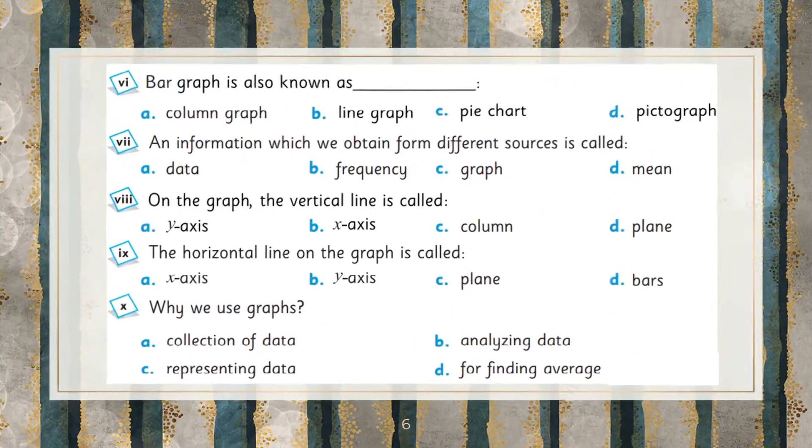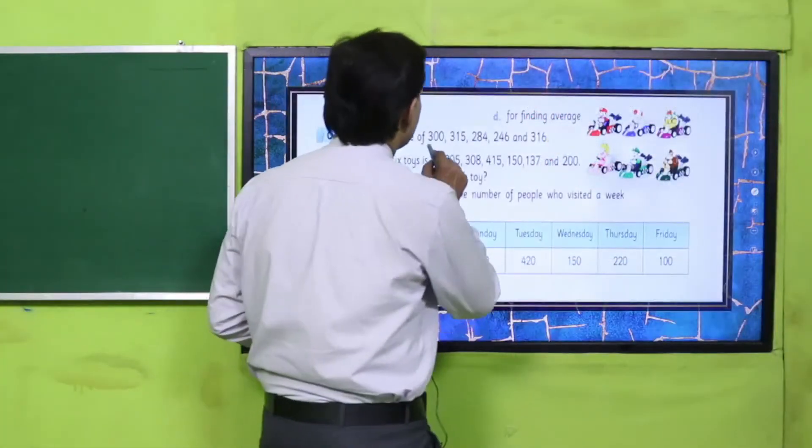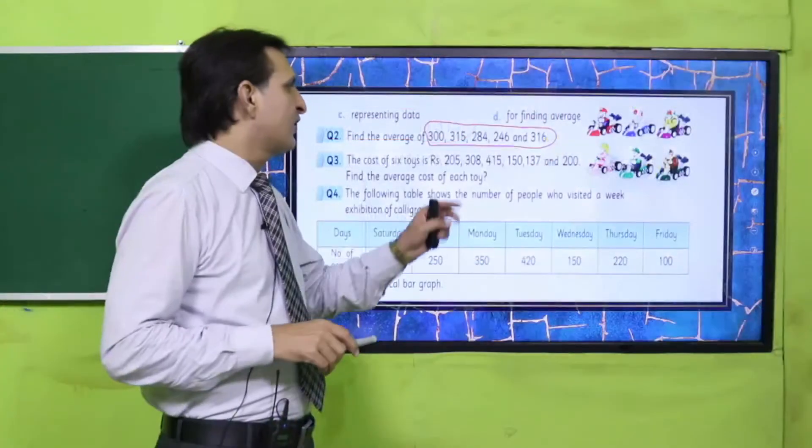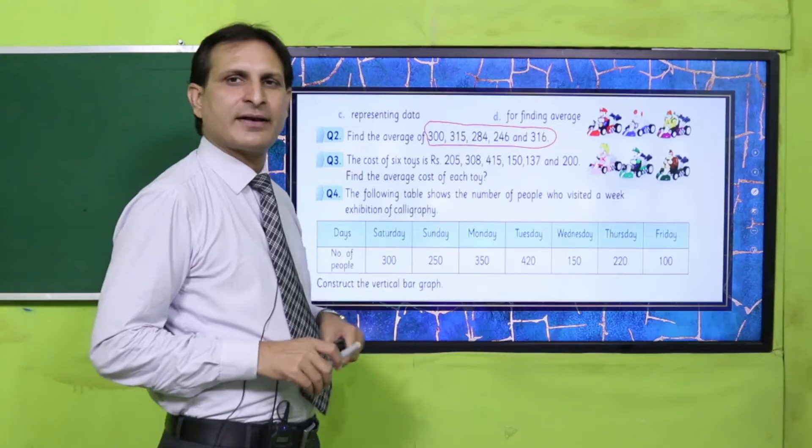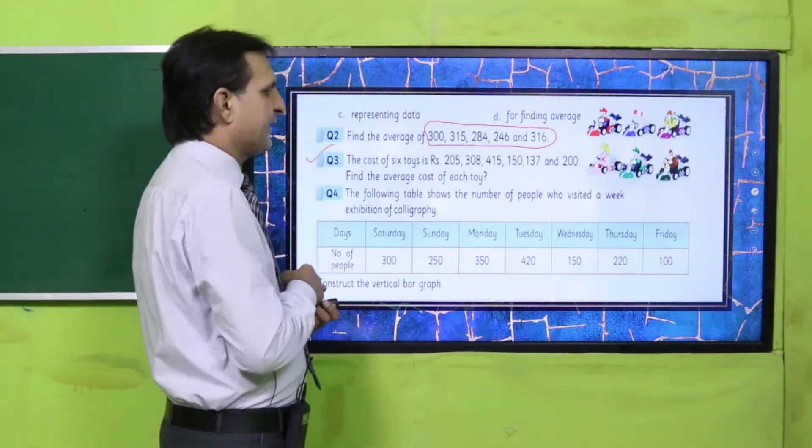Now question number 2: Find the average. Use the average formula. Add these numbers 1, 2, 3, 4, 5 and divide by 5 because there are 5 quantities. When you sum them and divide by 5, you'll get the average. Similarly, solve question number 3.